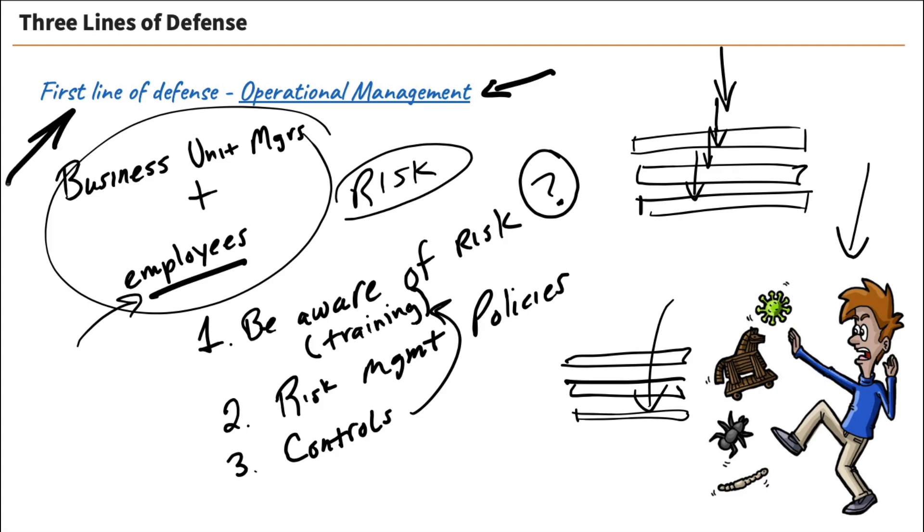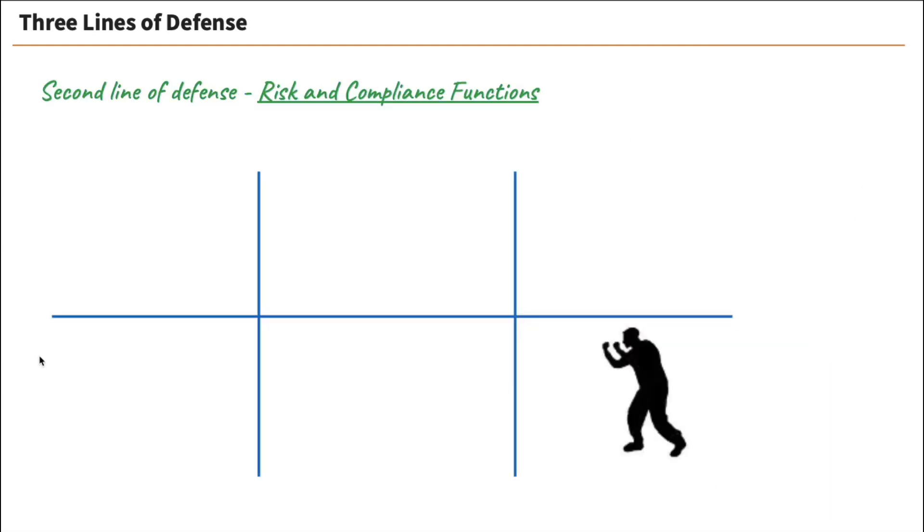Now, moving on. What is our second line of defense? If it's not the business unit managers and our frontline employees, it's got to be somebody else. And it is. It's our risk and compliance functions.